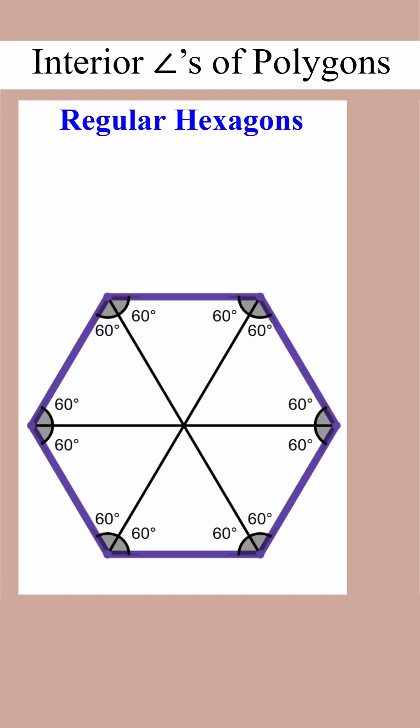We can follow a similar process to split up the regular hexagon into triangles. Half of 120 is 60, so all those 120-degree angles get split into smaller 60-degree angles. In each triangle, 180 minus 60 minus 60 is, well, 60. So each triangle has measures of 60, 60, 60.